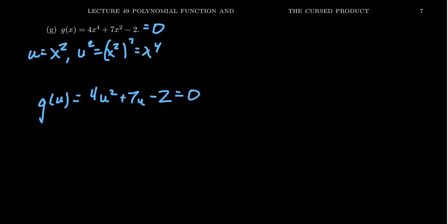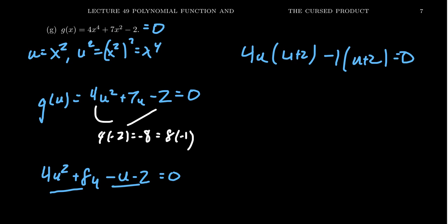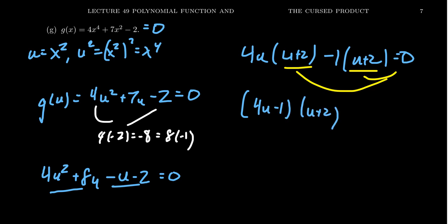We proceed to factor 4u² + 7u - 2. We need factors of 4 × (-2) = -8 that add up to 7 — that's 8 and -1. Factoring by grouping: 4u² + 8u - u - 2 = 0. The first group offers up 4u, leaving (u + 2); the second group offers a -1, leaving (u + 2). Since (u + 2) is common, we factor it out to get (4u - 1)(u + 2) = 0.